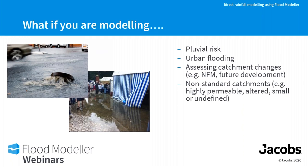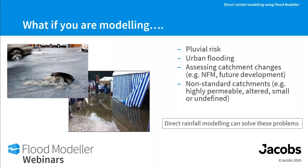Another problem the traditional approach can't address is assessing changes to your catchment, such as future development — building 5,000 to 100,000 houses and understanding how that changes catchment response and risk. Natural flood management (NFM) is another example, where you want to quantify the benefit of planting trees, building woody dams, or other interventions. Non-standard catchments — small, altered, highly permeable ones — also don't suit traditional hydrological analysis. In all these circumstances, direct rainfall modelling provides another tool.